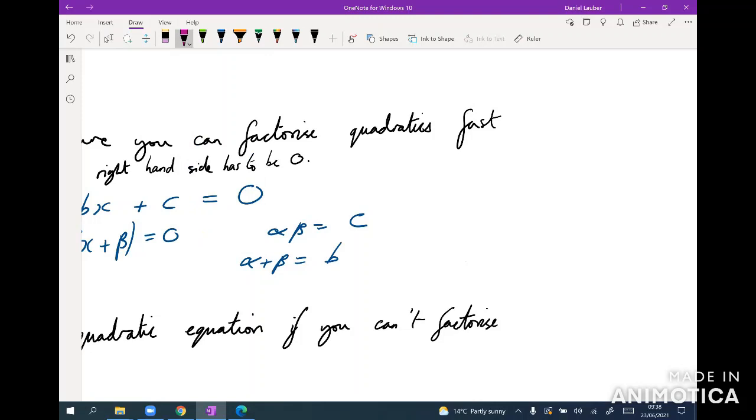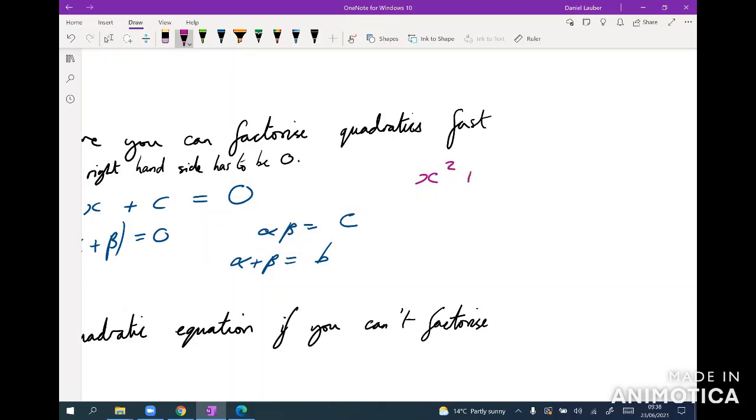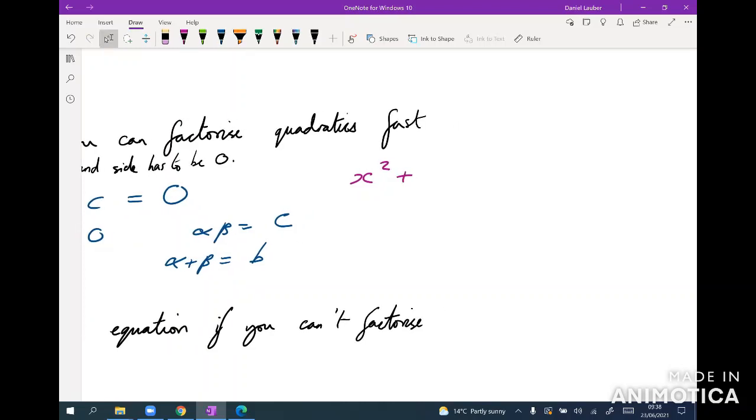The first thing I recommend is just look for the factors of c and then pick the two numbers that sort of work. It's kind of just done by eye. For example, x squared plus 6x plus 8 equals 0. The way I'd look at that: okay, 8 has factors 1, 2, 4, and 8, and so just looking at that, well, we need two numbers that multiply together and add to make 6. So very quickly it's just going to be x plus 2 times x plus 4 equals 0.